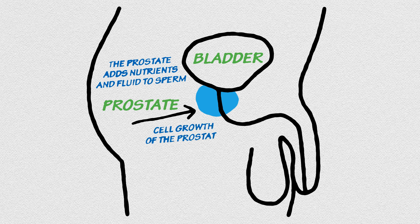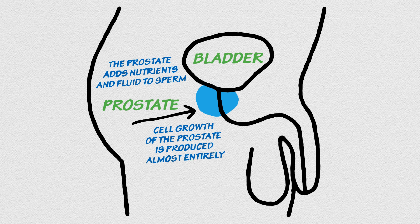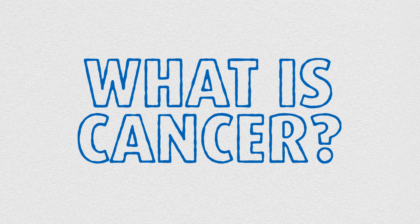Cell growth of the prostate, both healthy and cancerous, is produced almost entirely by testosterone from the testicles. Wait, cancerous? Let's step back for a second. What does that mean?